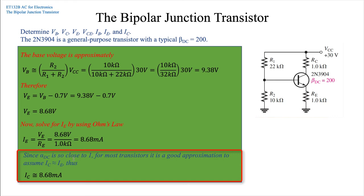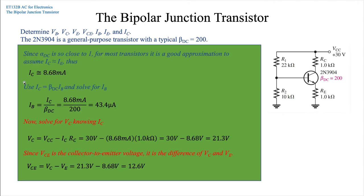Since alpha DC is so close to 1 for most transistors, this is a good approximation, and we can assume that IC is approximately equal to IE. So in this case, since we know our value of IE is 8.68 milliamps, we have 8.68 milliamps for IC.